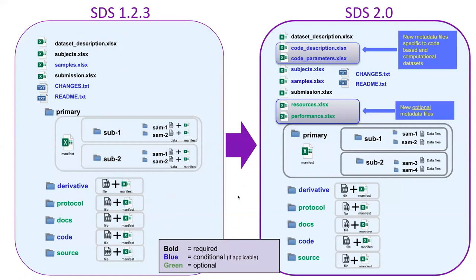Looking at the broad overview, the folders are not really different. We still have a derivative folder, which is conditional, a protocol folder, a documents folder, a source folder, and a code folder which is also conditional. If a dataset is computational, it will require those code folders. Here are our standard dataset descriptions, and we now have some additional conditional files. If there is a code dataset, two new files will be required, and the subjects and sample files will not be required for code-type datasets. If you have an experimental dataset, you will still have the subjects and samples files.